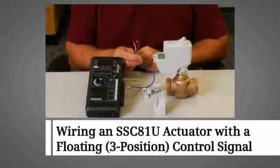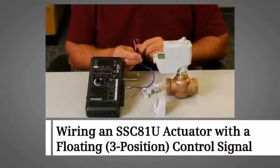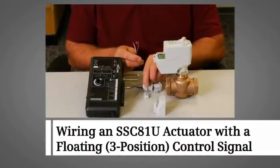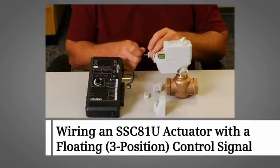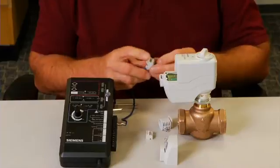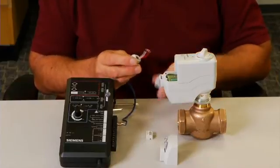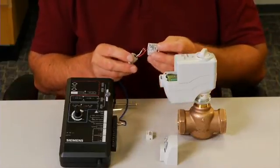This video demonstrates wiring of the SSC 81U to a controller that uses a floating control signal, also called 3 position control. First, we will need to terminate three wires to the actuator's terminal block.